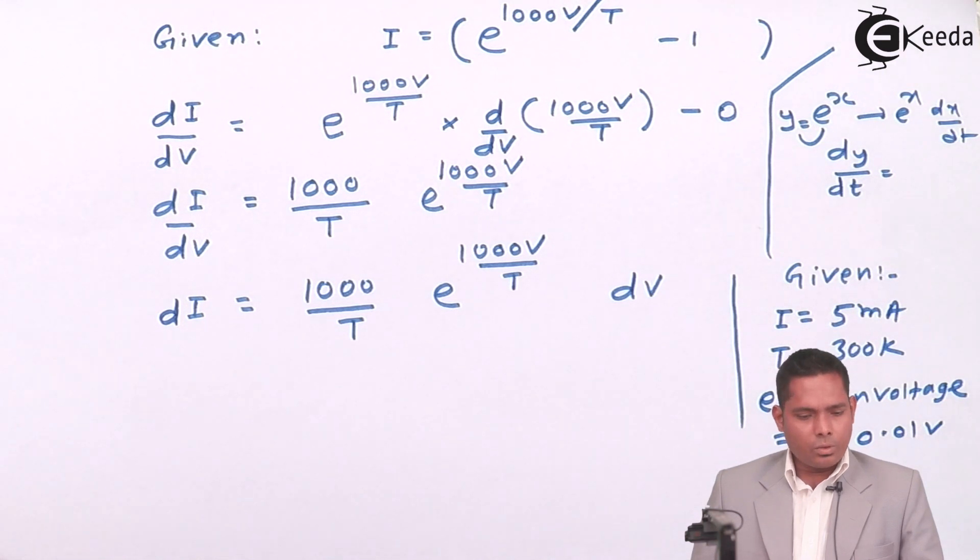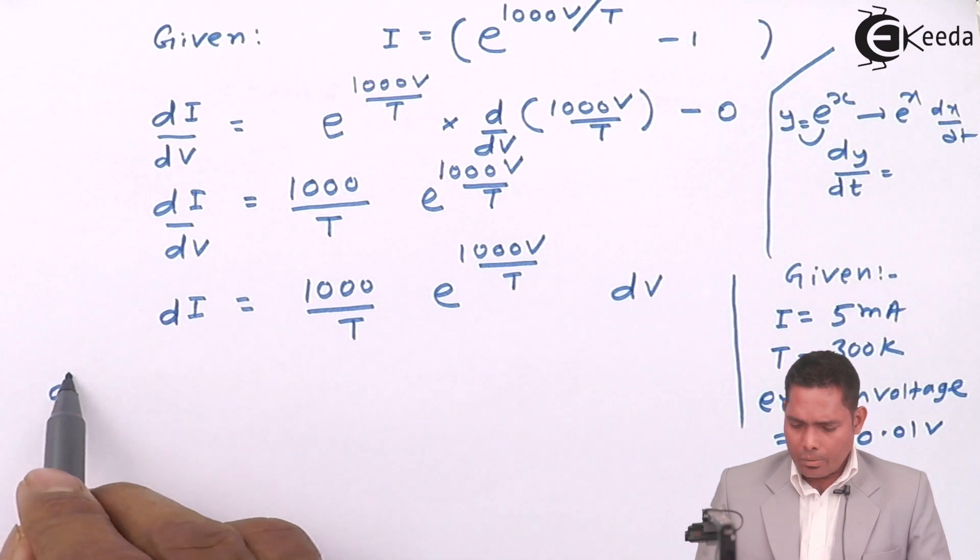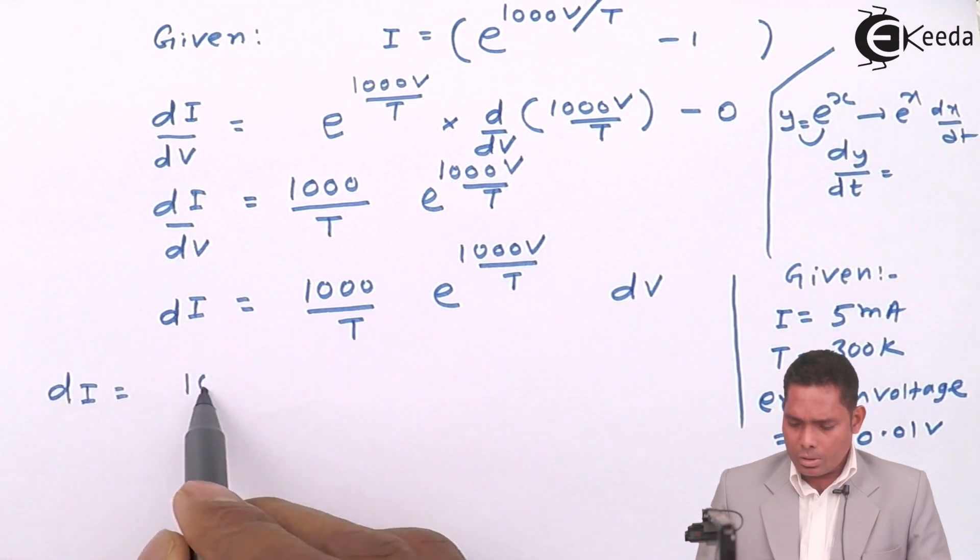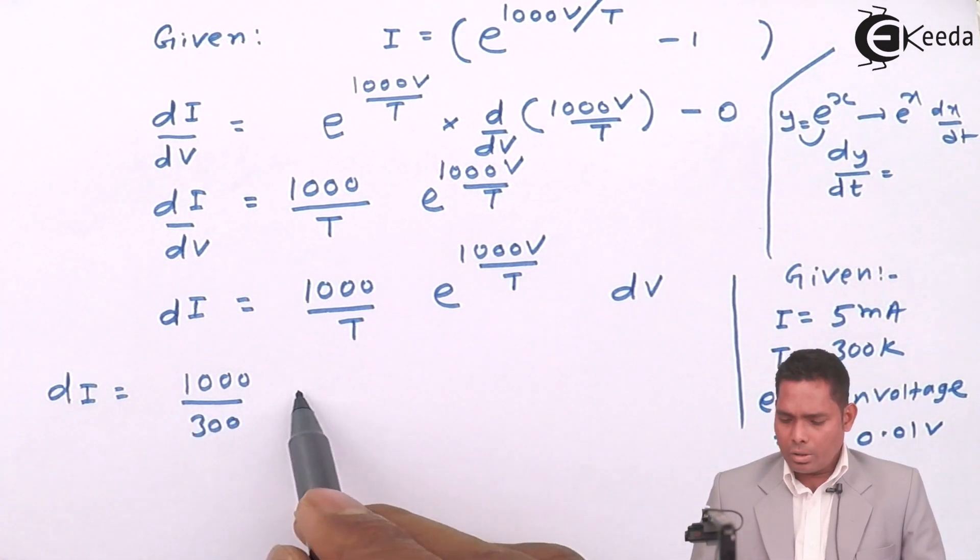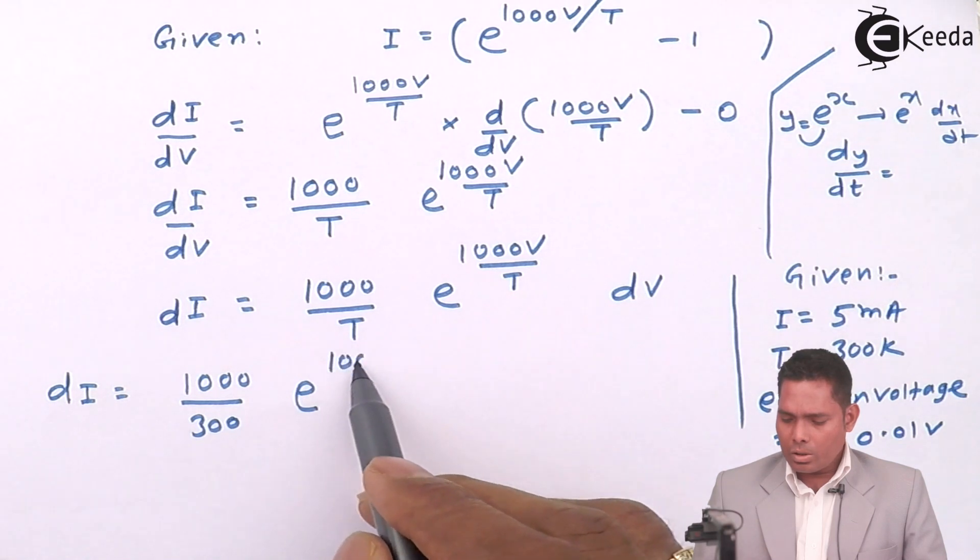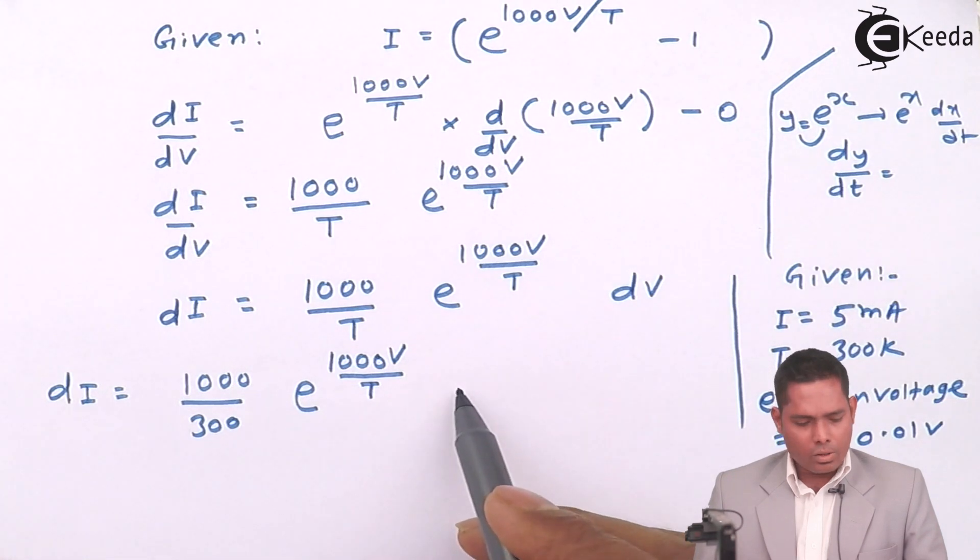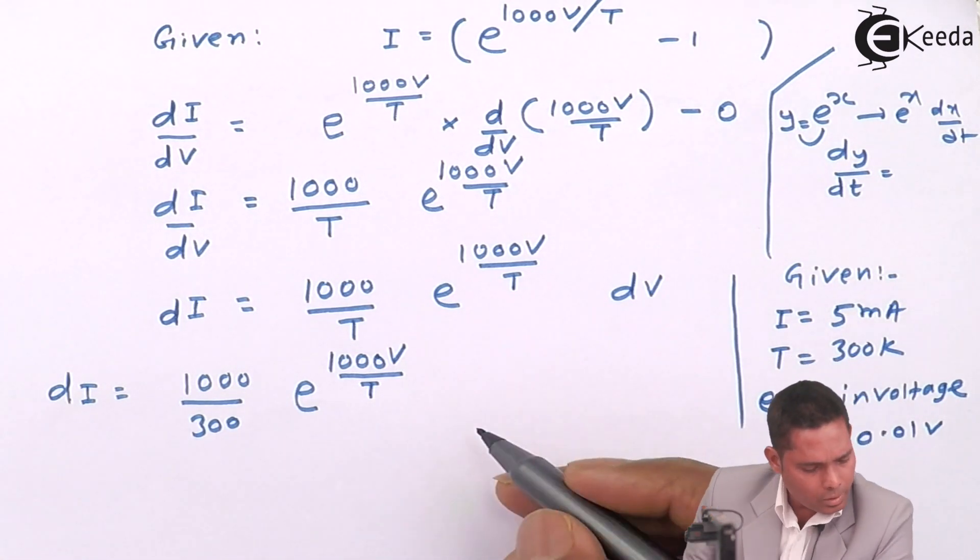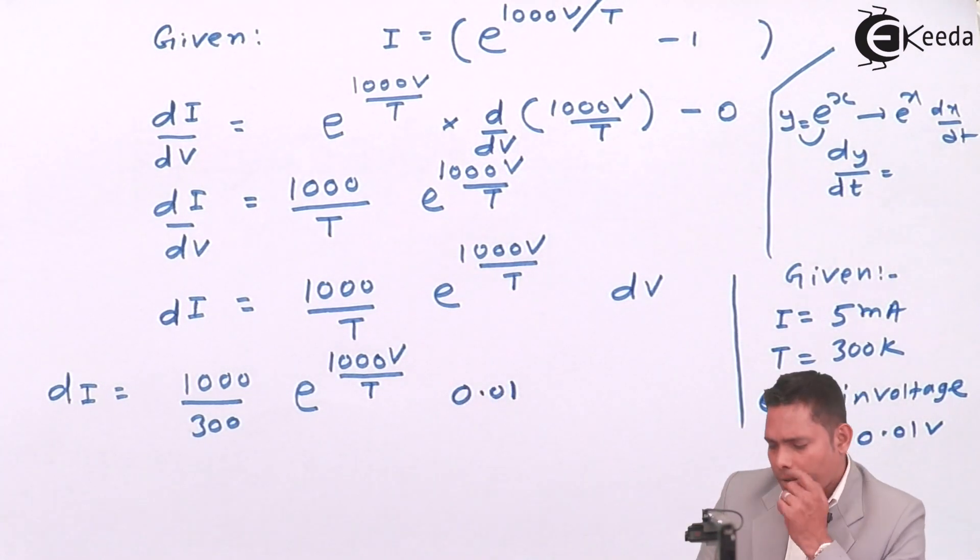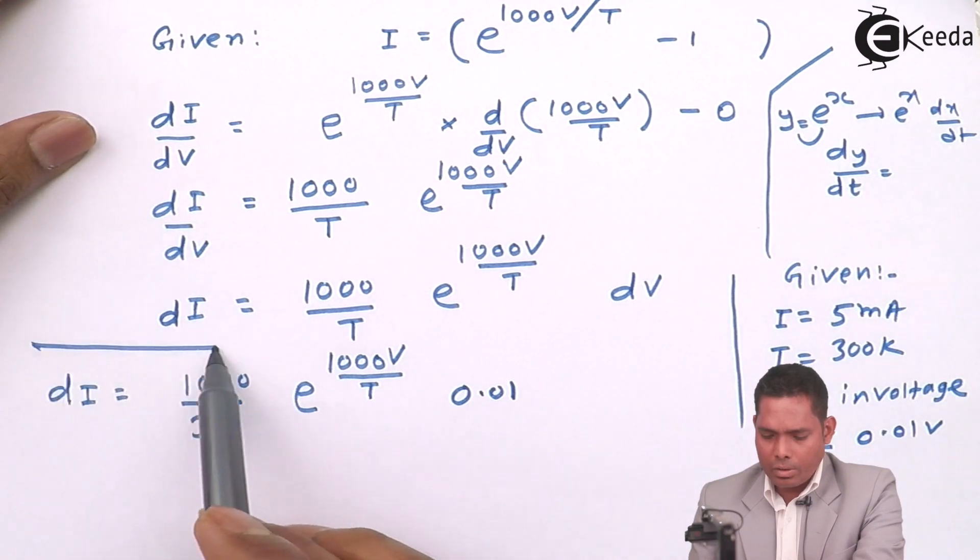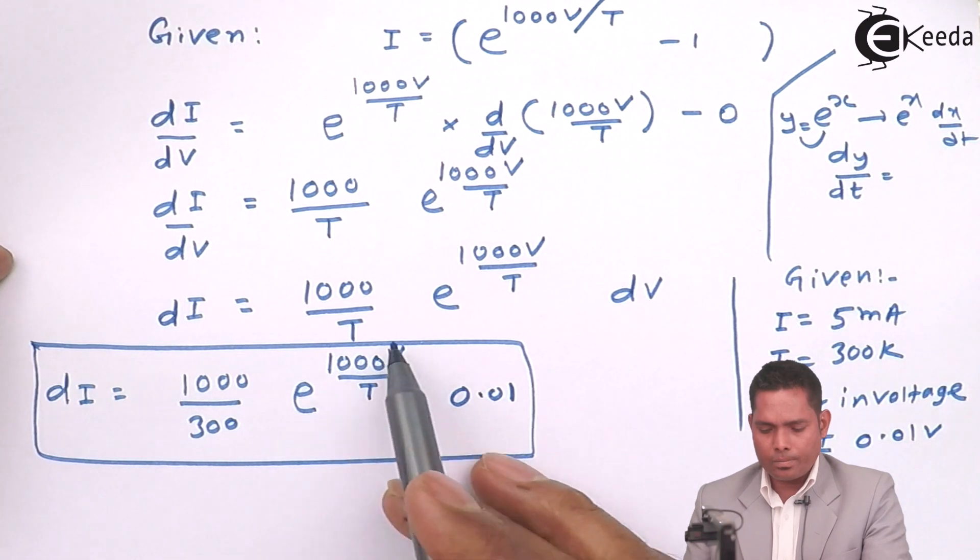So if I use this, then dI will become 1000 divided by 300, e raised to 1000V/T, times dV which is 0.01. But we have to find - I will rewrite the equation in the next page.